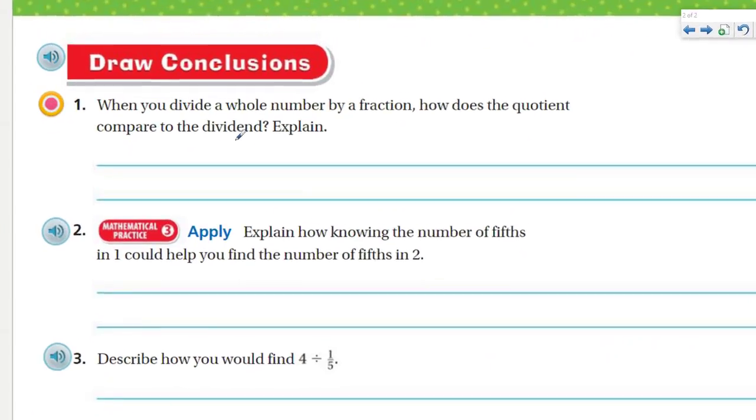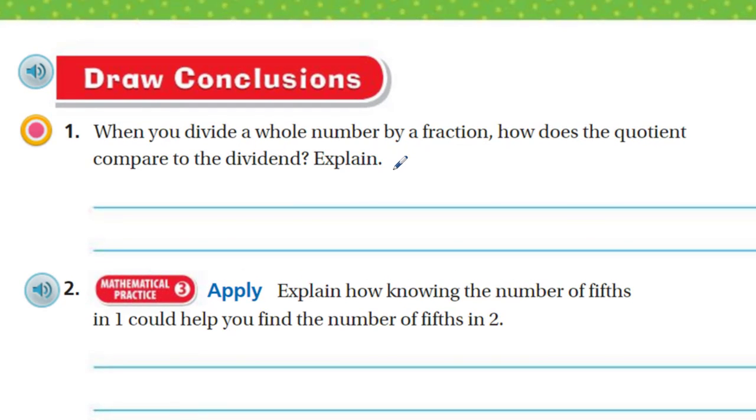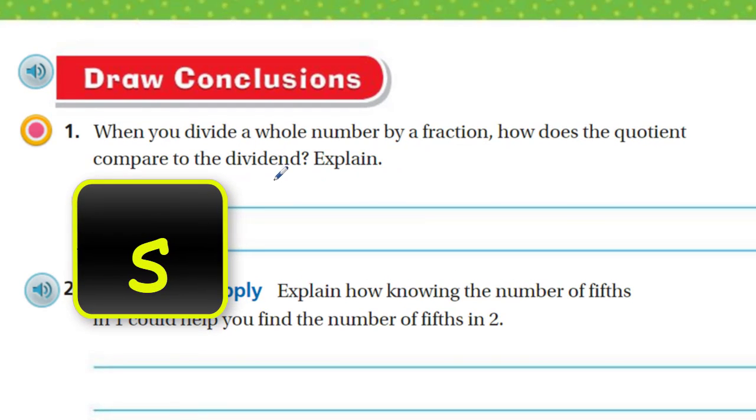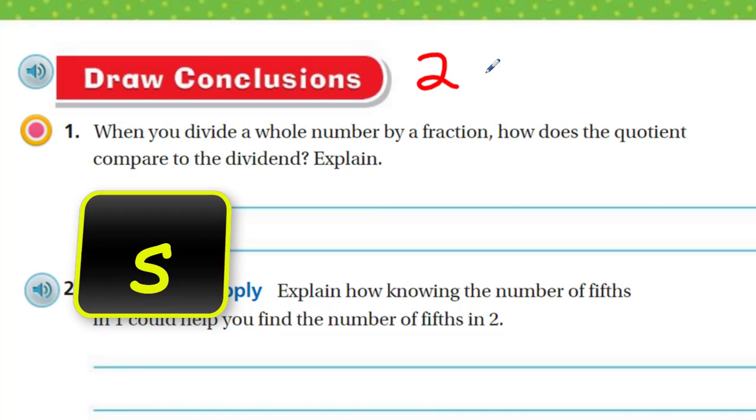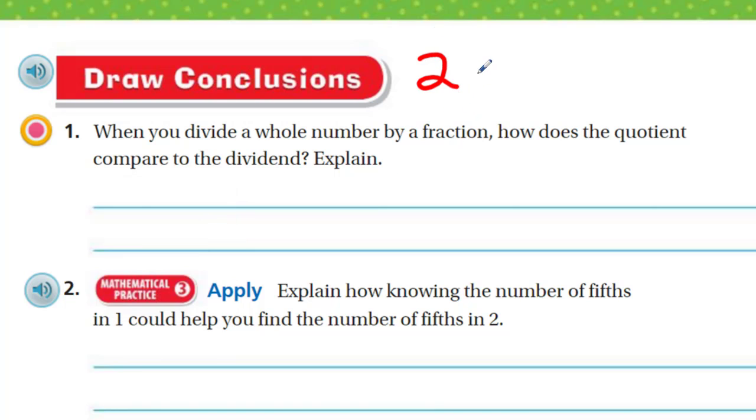So draw conclusions. When you divide a whole number by a fraction, how does the quotient compare to the dividend? Explain. Well, let's think about that last problem. We had 2 yards of string. We were dividing it. We divided by 1-third. And we got an answer of 6. Now, the quotient is the 6. And the dividend is the 2. So the quotient is definitely larger. It's greater than the whole number.